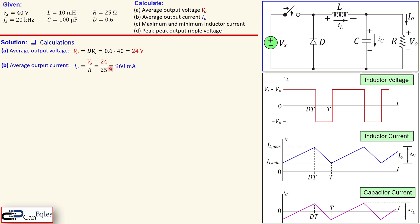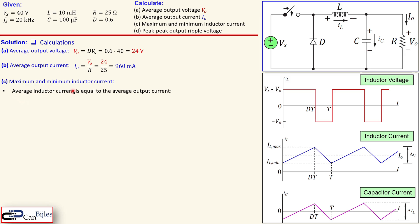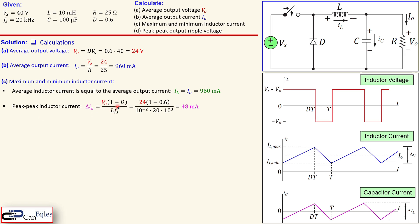The average output current is given by Ohm's law since we know the output voltage, so it is 24 divided by 25, which gives 960 milliamps. The average inductor current equals the average output current, so also 960 milliamps. The peak-to-peak inductor current is given by the expression involving the duty cycle, the switching frequency, and the inductor value itself, and that gives us 48 milliamps.